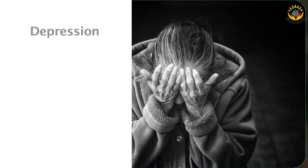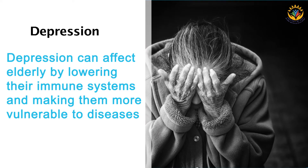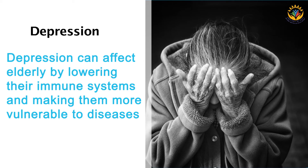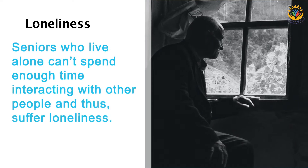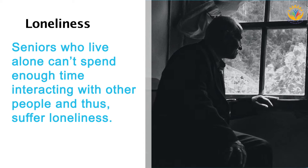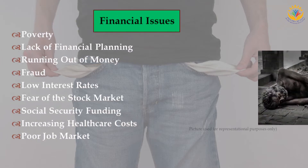Cognitive impairment — it is dementia. Depression can affect senior citizens in many ways, such as by lowering their immune systems and making them vulnerable to diseases. Many senior citizens who live alone cannot spend enough time interacting with other people, and loneliness can be overwhelming for some of them.